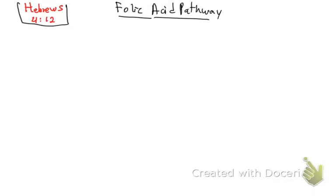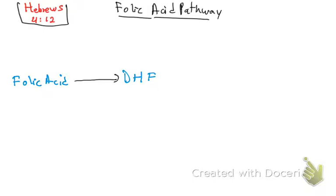Let's talk about the folic acid pathway. We need to start with folic acid — that makes sense. Folic acid needs to become dihydrofolate. Now, this conversion to dihydrofolate doesn't happen by itself; it needs an enzyme. This enzyme is called dihydrofolate reductase. So that means you are going to reduce your folic acid using the enzyme dihydrofolate reductase. Now you have your dihydrofolate.